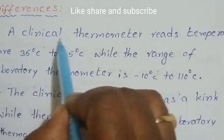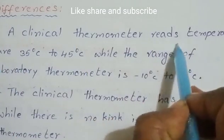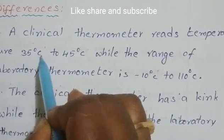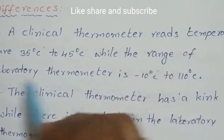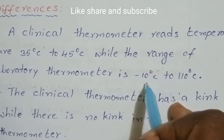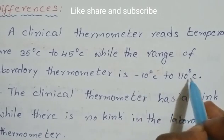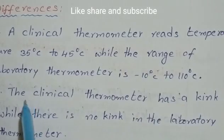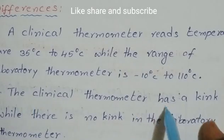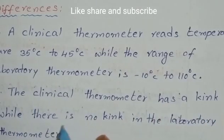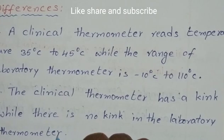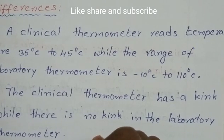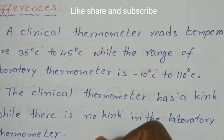Differences: a clinical thermometer reads temperature from 35 degree centigrade to 45 degree centigrade, while the range of a laboratory thermometer is minus 10 degree centigrade to 110 degree centigrade. The clinical thermometer has a kink, while there is no kink in the laboratory thermometer.